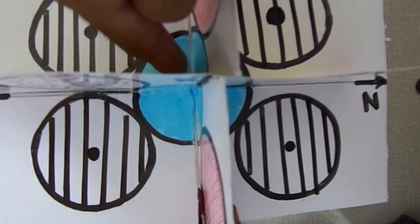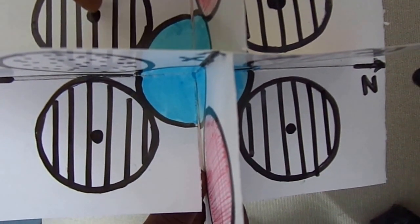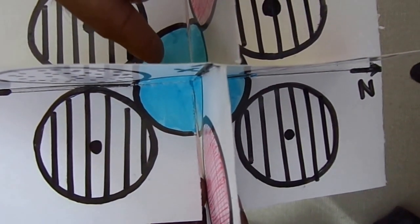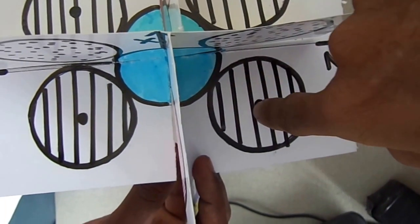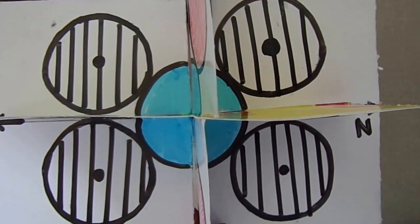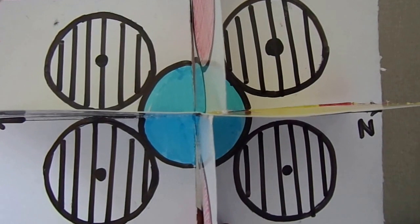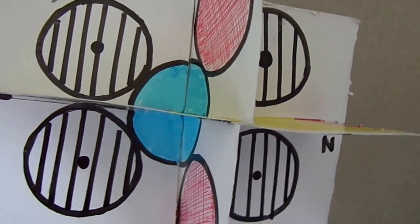That is in contact with this unit cell face centered atom. One face centered atom is in contact with this corner atom. Number two, number three, number four. Say considering this as one plane. Then we are going for the next plane.